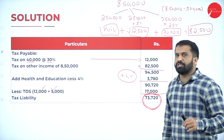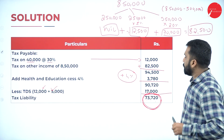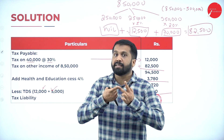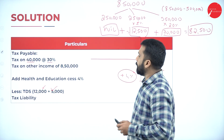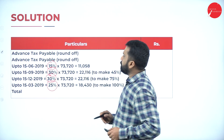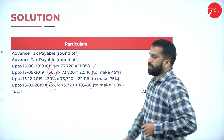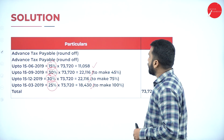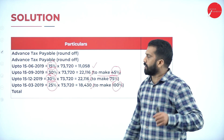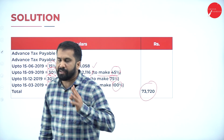Now calculate the four installments on seventy three thousand seven hundred twenty. The percentages are: first installment fifteen percent, second installment thirty percent, third installment thirty percent, fourth installment twenty five percent. Calculating these gives approximately eleven thousand fifty-eight, twenty-two thousand one hundred sixteen, twenty-two thousand one hundred sixteen, and eighteen thousand four hundred thirty. This is all about Problem 3 advance tax.